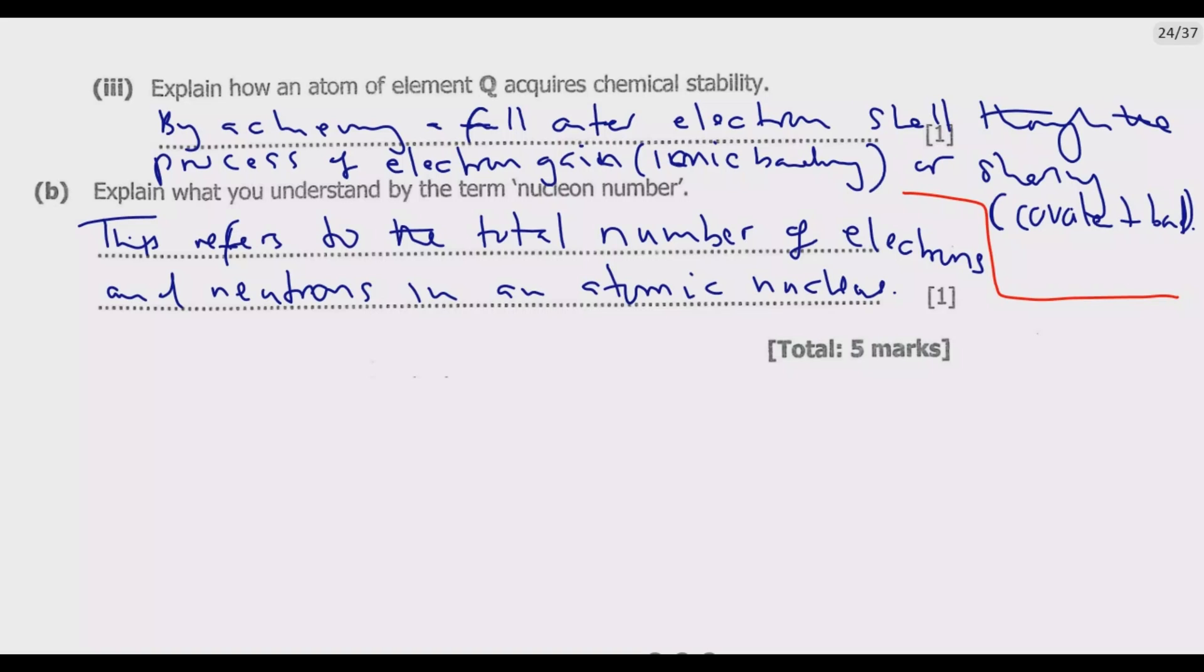So it refers to the total number of protons and neutrons in an atomic nucleus. It is also known as the mass number. Once you do that, you're good to go and you get these five marks.